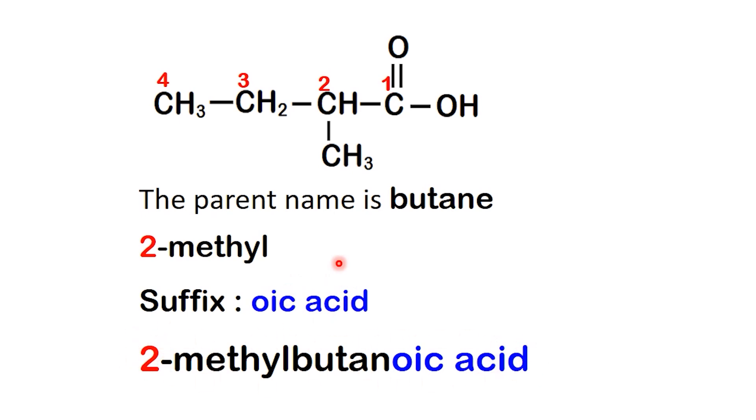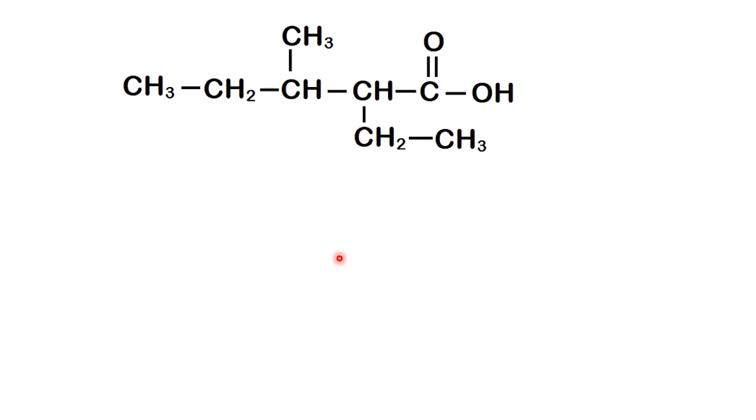So far, we've seen a straight chain and a single branch. Now, let's try a molecule with more than one substituent. Take this example.